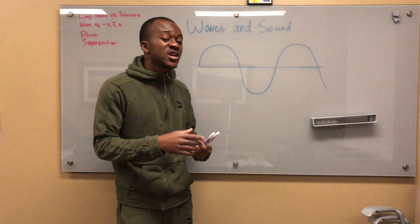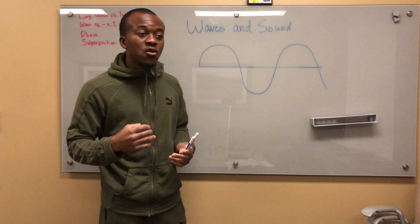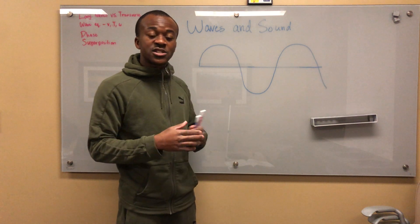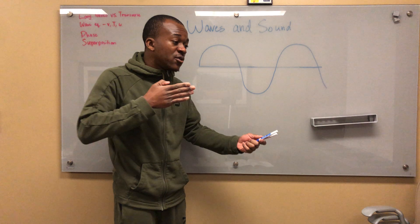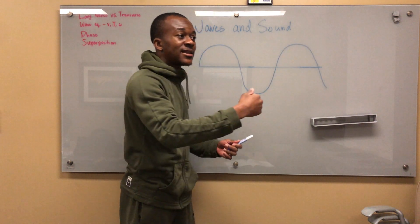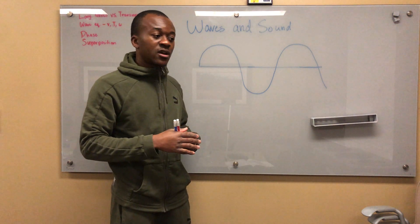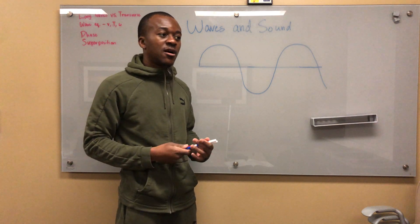A transverse wave is a wave whose particles move perpendicular to its direction of propagation. So basically, if a wave is moving this way, its particles are moving like this - up and down as it's moving. An example of this would be electromagnetic waves, like light waves.